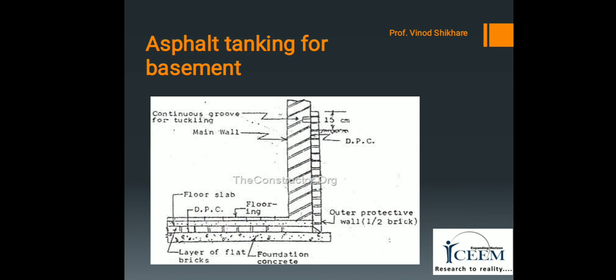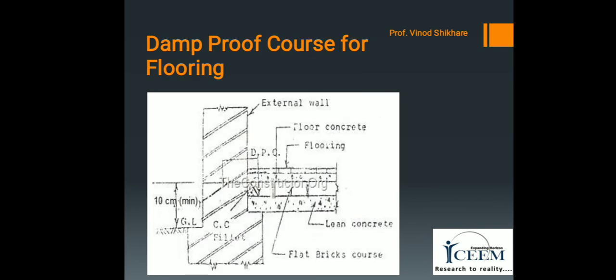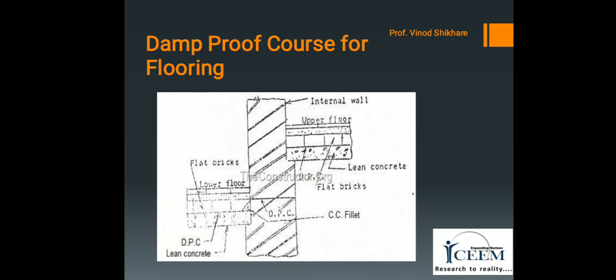Next is asphalt tanking for basement, in which the basement is protected by asphalt sheets. Next is damp proof course for flooring. Before flooring, the damp proof course is provided — starting with lean concrete, then the damp proof course, and then the flooring. The figure also shows the damp proof course which is laid after a bed of lean concrete, followed by the damp proof coat, then flat bricks, and finally the flooring is provided.